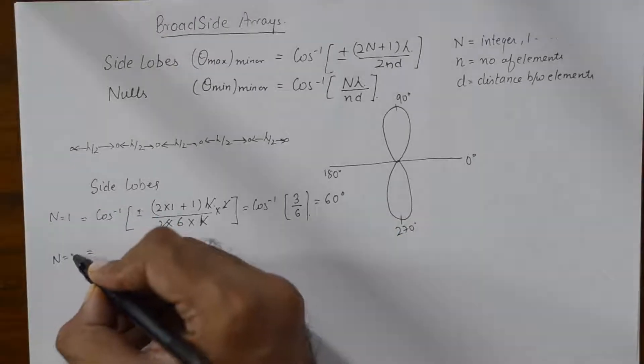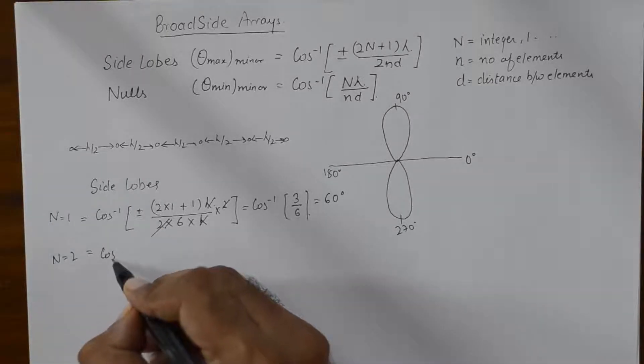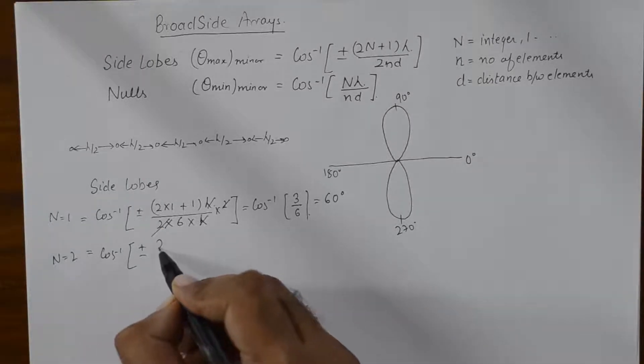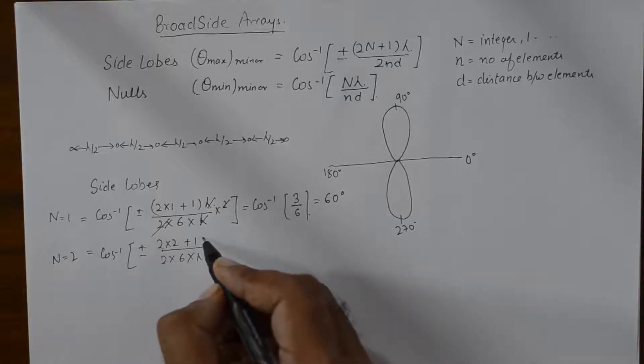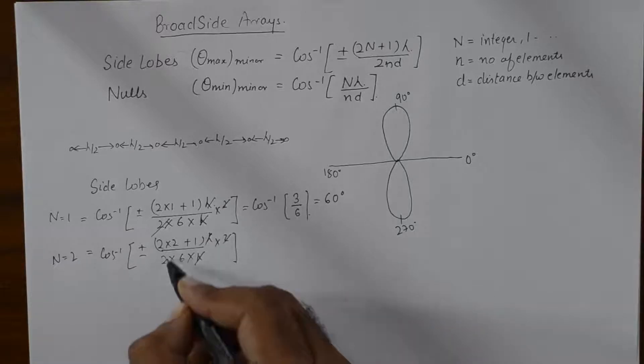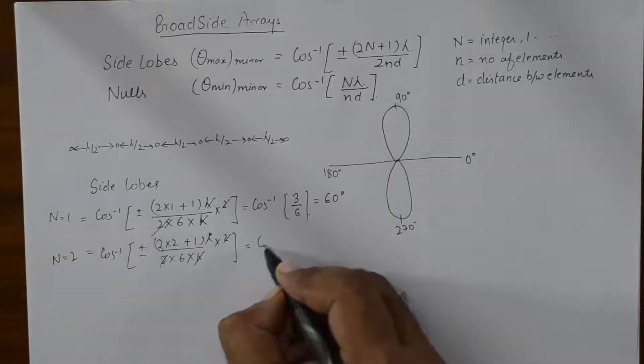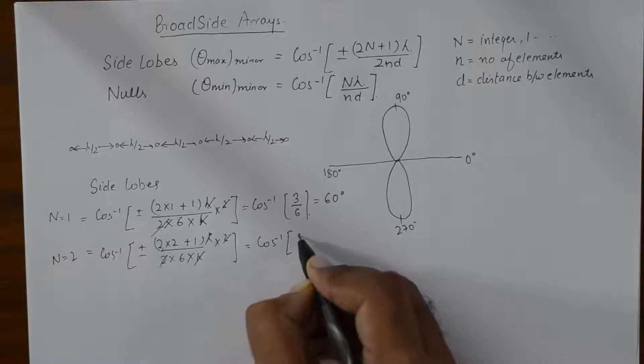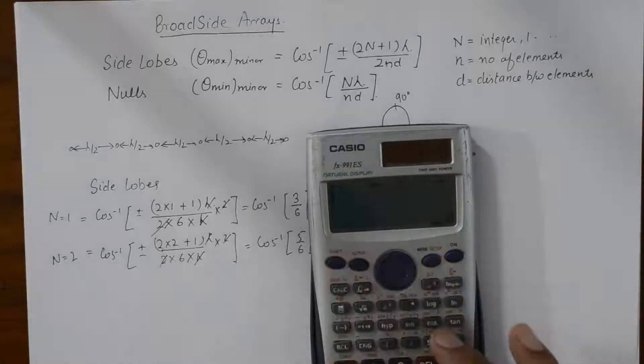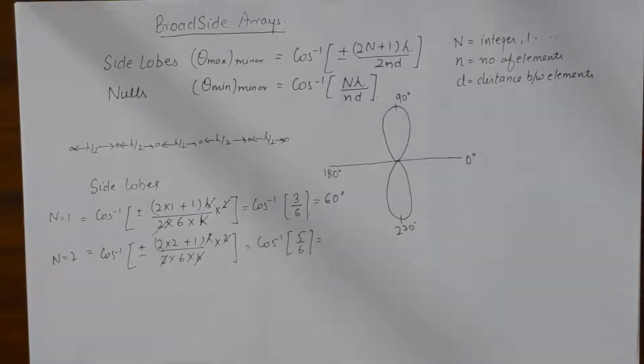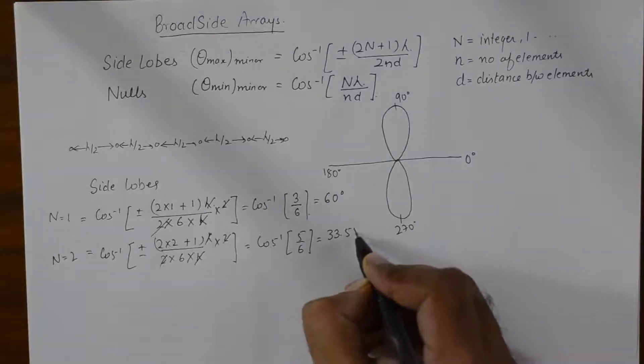Similarly, where N is equal to 2, we get cos inverse. This remains same. So, this becomes cos inverse 5 by 6. This should also give us a valid value. This is 33.55.